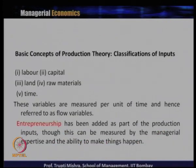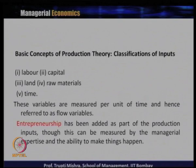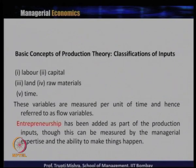We will now introduce some basic concepts of production theory, starting with the classification of inputs. Inputs are the raw materials or different kinds of inputs used in the production process that help convert input into output. The age-old definition says there are four kinds of factors of production: land, labour, capital, and entrepreneurship. But time is also an important factor considered as part of inputs — so we have labour, capital, land, raw material, and time.